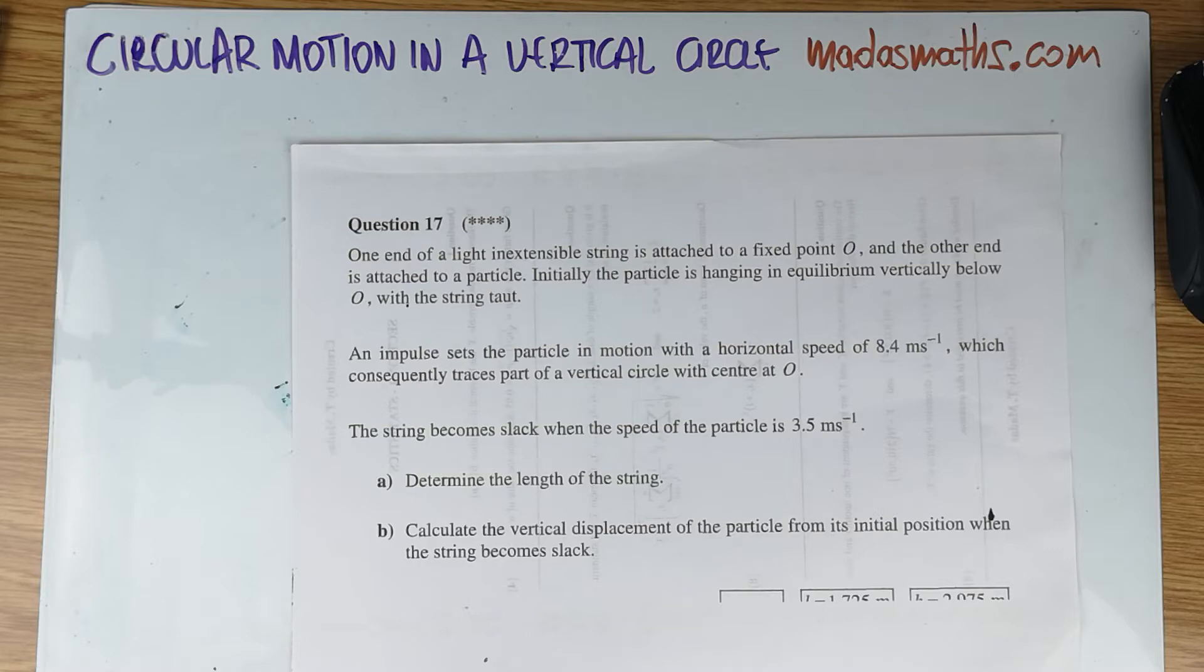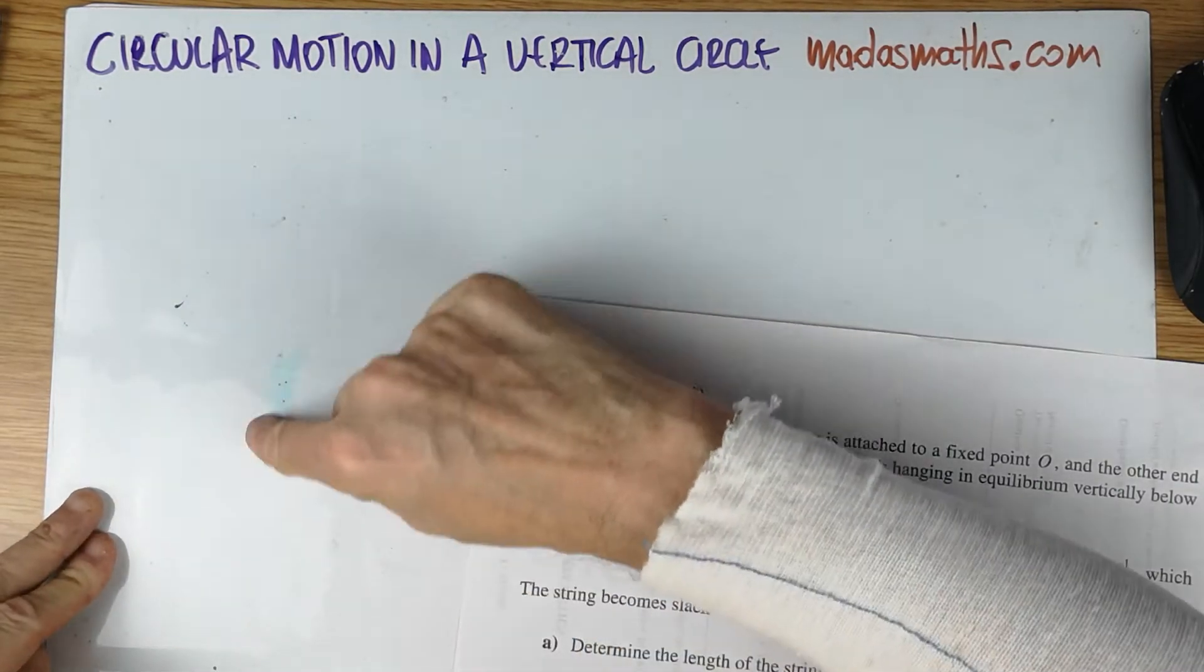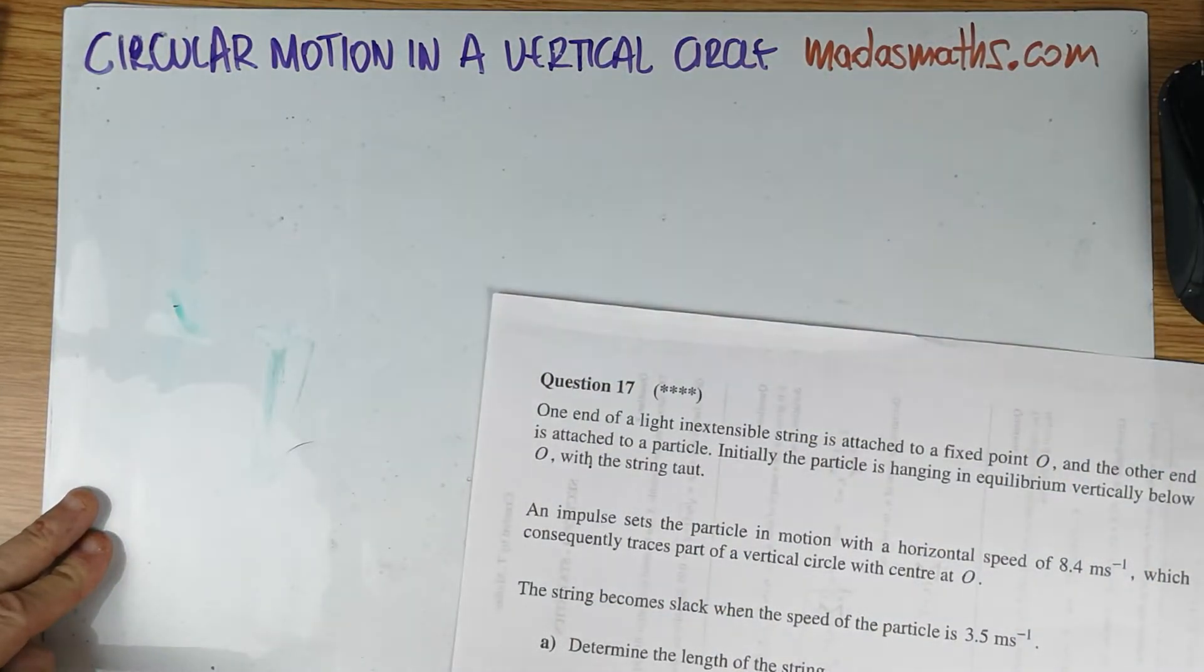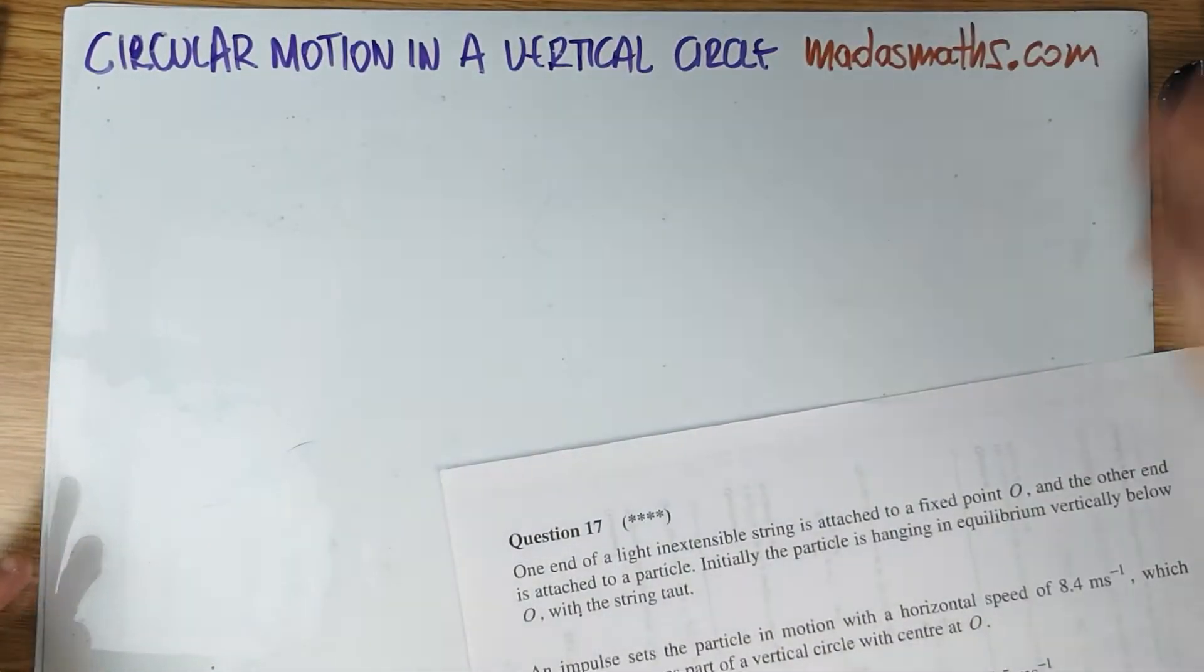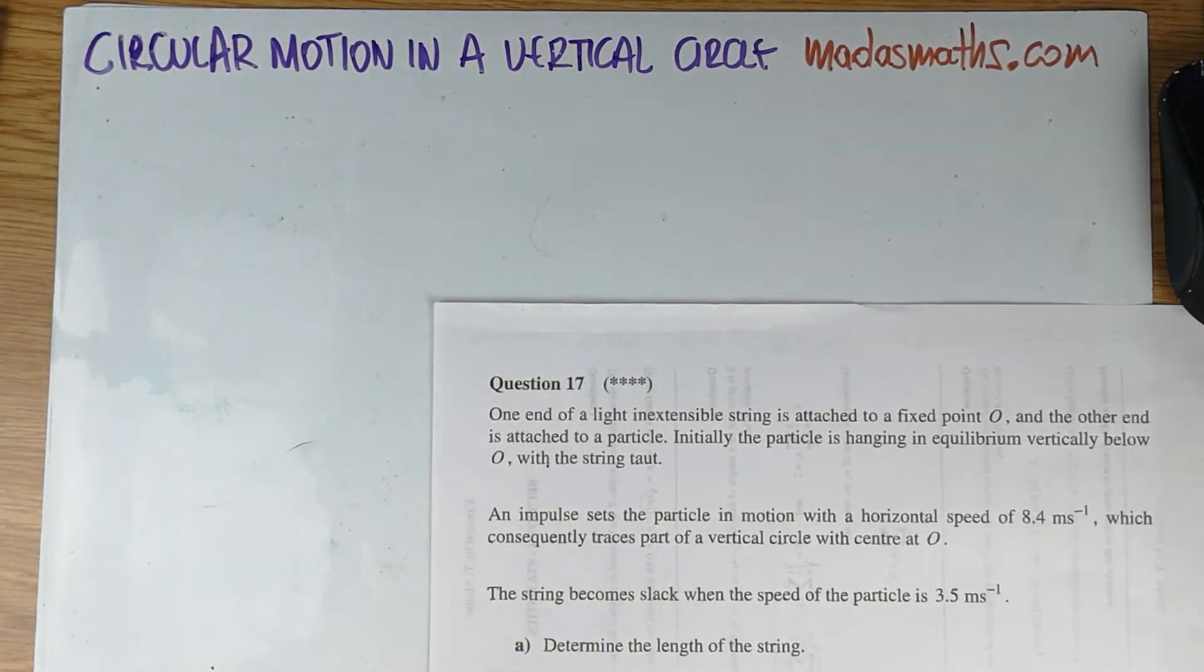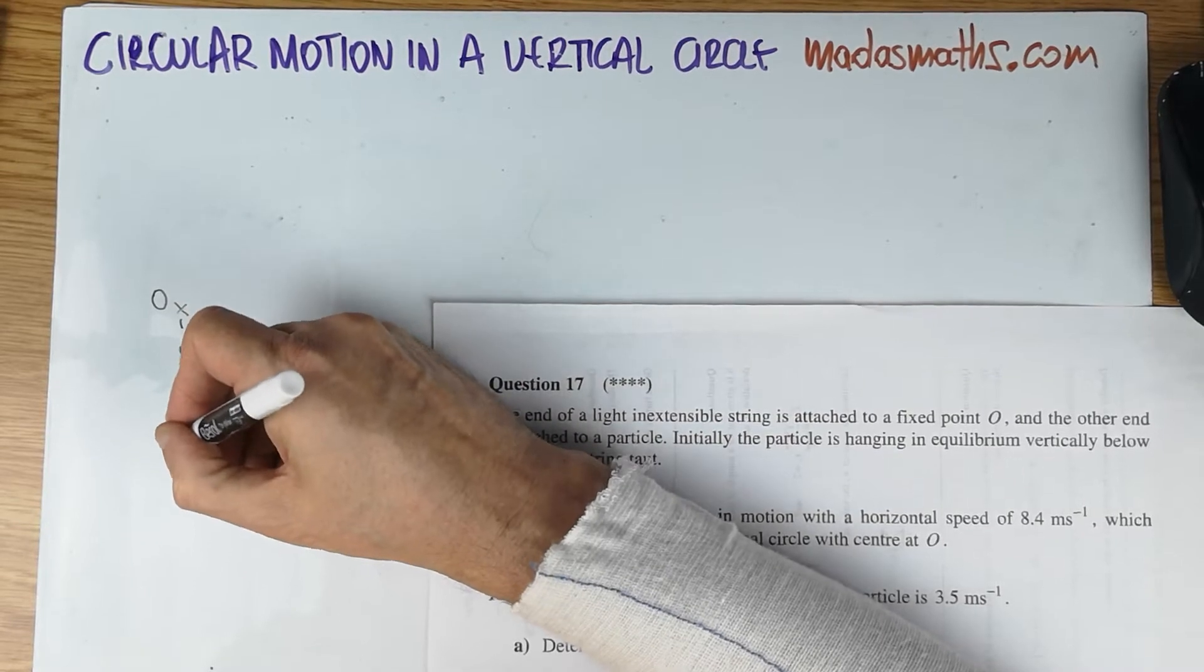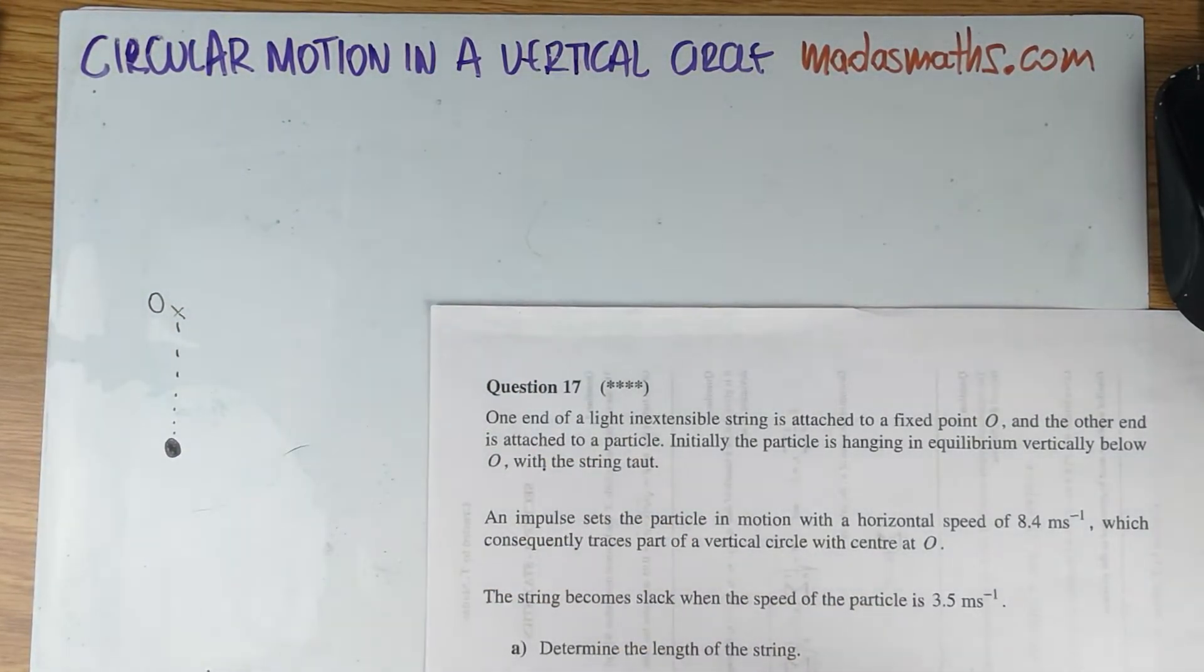So read to understand what the question is all about and move into the relevant diagram and start putting the information into your picture. So one end of a light inextensible string is attached to a fixed point O. The other end is attached to a particle. Initially, the particle is hanging in equilibrium vertically below O with a string taut. So here's the O, and here is the bottom of the string. There's the particle. That's all the information we have. It's in equilibrium.